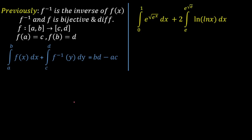In my previous video I derived a nice identity involving integration of a function and its inverse. The setup is: f inverse is the inverse of a function f of x, where both f inverse and f are bijective as well as differentiable. f is defined from [a, b] to [c, d] in closed intervals, with f(a) = c and f(b) = d. Then the identity states: the integral from a to b of f(x) plus the integral from c to d of f inverse of y equals bd minus ac.